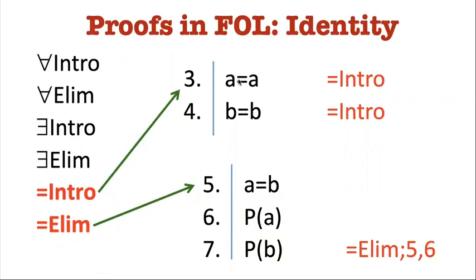Basically anytime, anywhere in a formal proof that you need one of these identities like A equals A or B equals B, you're allowed to assert it. And this is one of those unique rules like REIT that does not require any previous justification because this literally follows from no premises at all. It's a logical truth or it's a first-order validity.